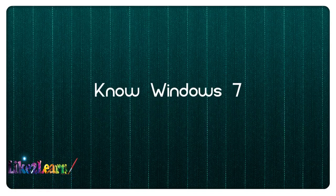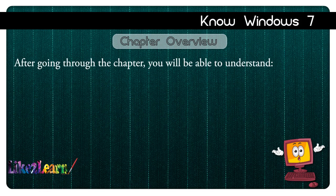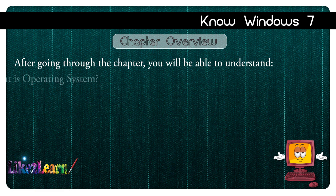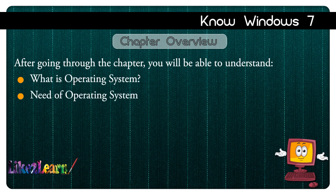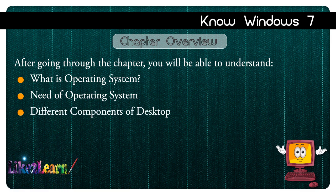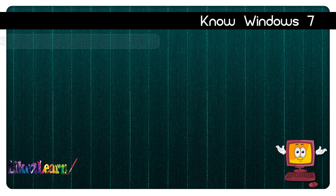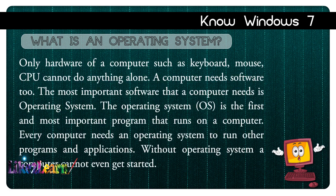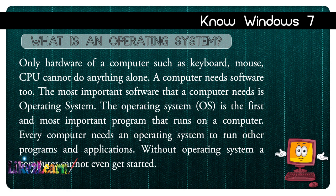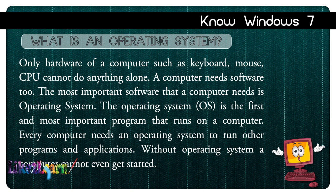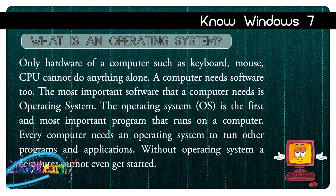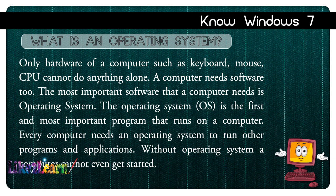Windows 7 chapter overview. After going through the chapter you will be able to understand what is an operating system, the need of an operating system, different components of the desktop, and arranging icons. Only hardware of a computer such as keyboard, mouse, and CPU cannot do anything alone. A computer needs software too. The most important software is the operating system. The operating system is the first and most important program that runs on a computer.